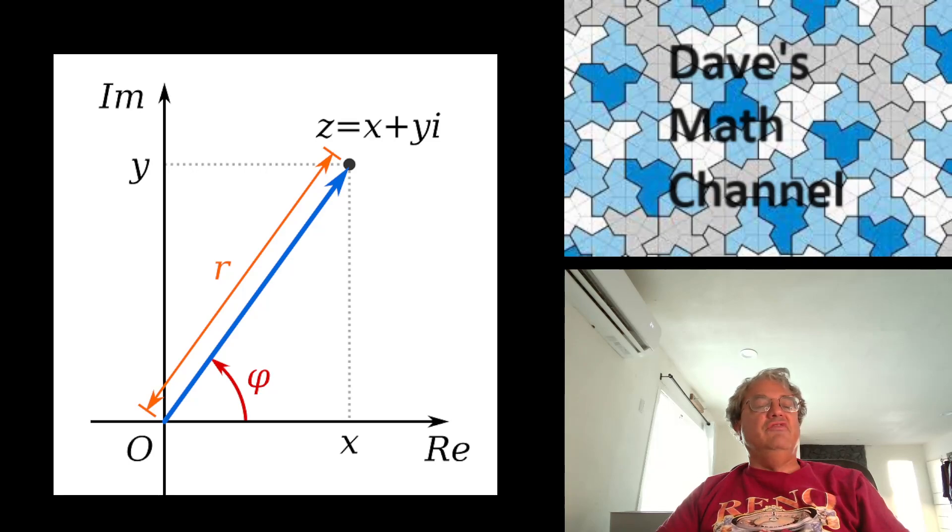And then you've got this angle phi, which is the angle from the x-axis to the complex number z. And there's a formula for that, the arctangent of y over x. So you have these two representations of complex numbers. They're both very useful.